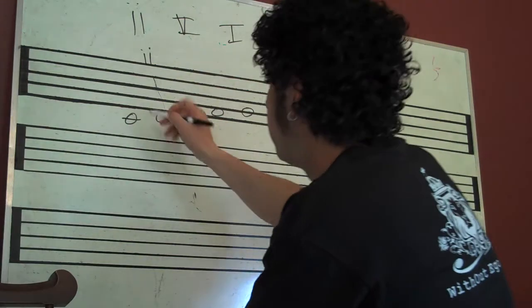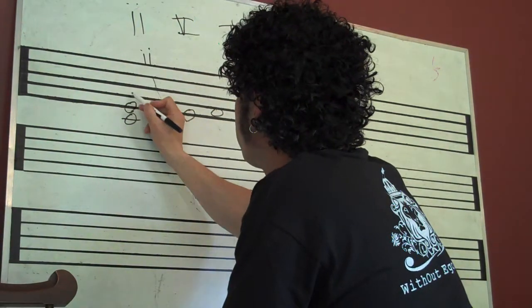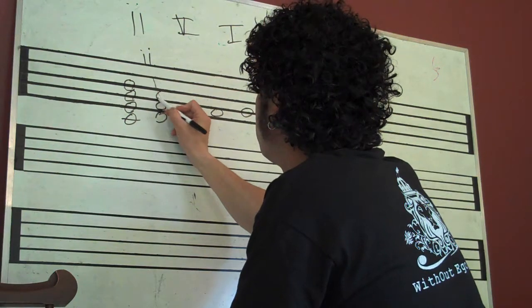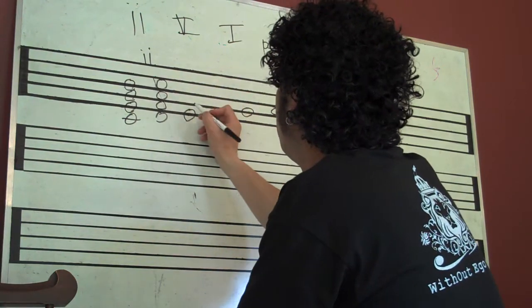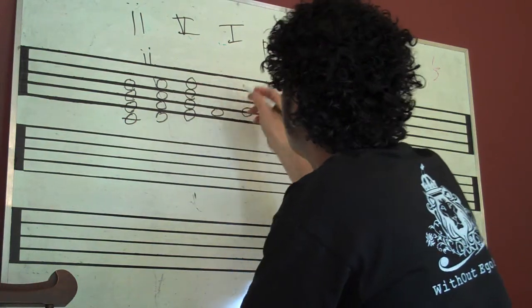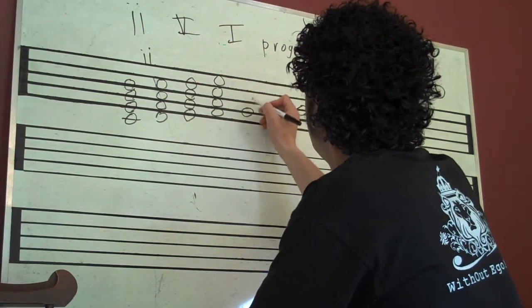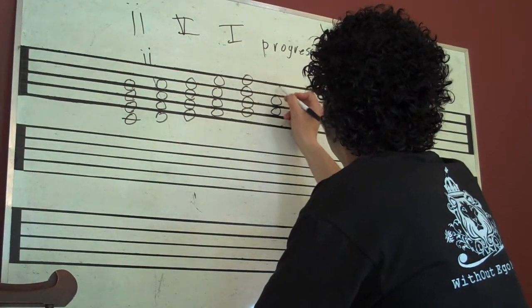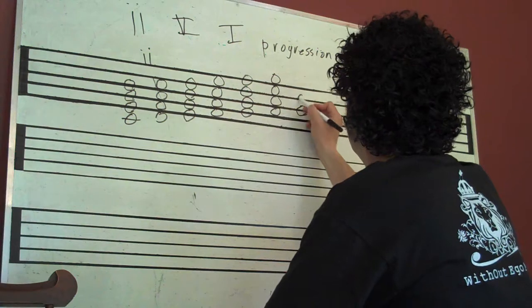We're just going to build our seventh chords here again like we did in the other videos. If you haven't seen this, you might want to review. This is all diatonic to the key of C, and we're just building these.